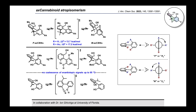That is, no coalescence of the enantiotopic protons was observed up to 95 degrees in deuterated toluene. These data indicate that AXCBNs are class I atropisomers, which rapidly equilibrate at room temperature and are not isolable, while AXCBDs are class III, which are stable and separable at room temperature. Though AXCBNs can be treated as achiral due to the rapid interconversion of the individual atropisomers, they would most likely bind to their biological targets in chiral non-racemic configurations.